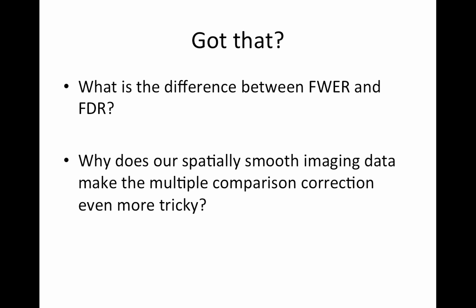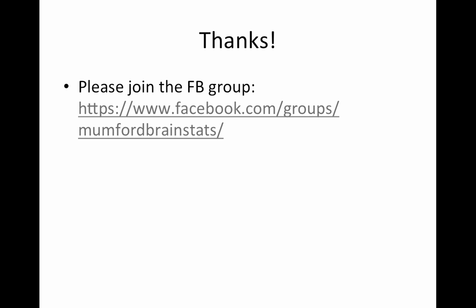Make sure you know the difference between family-wise error rate and FDR — you should be able to close your eyes and picture the simulation illustration. Also consider: why does spatially smooth imaging data make multiple comparison correction more tricky? Basically, we can't count the number of independent tests. More on that next time, including a MATLAB demo. Thank you very much — please join the Facebook group by searching for Mumford BrainStats.